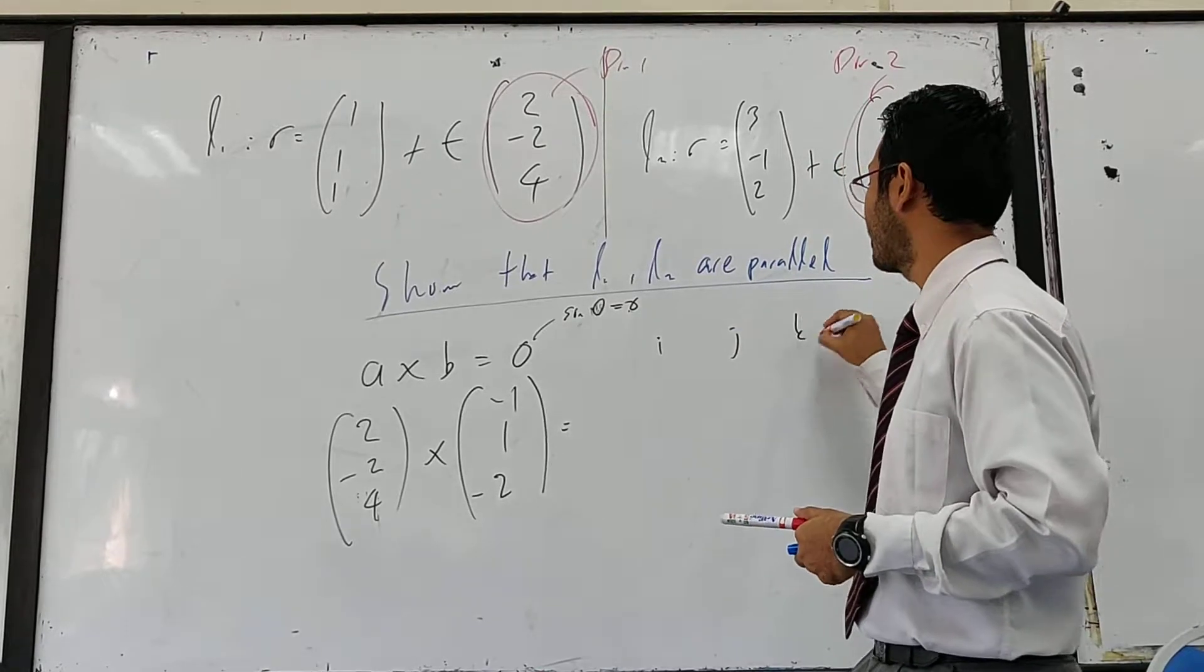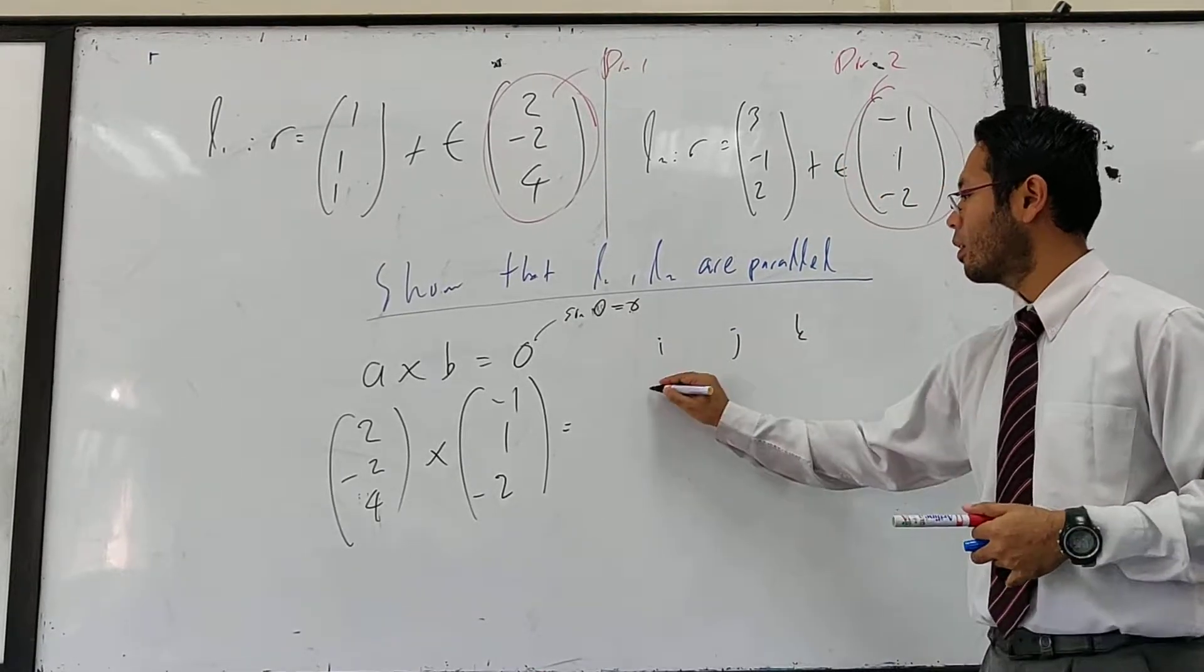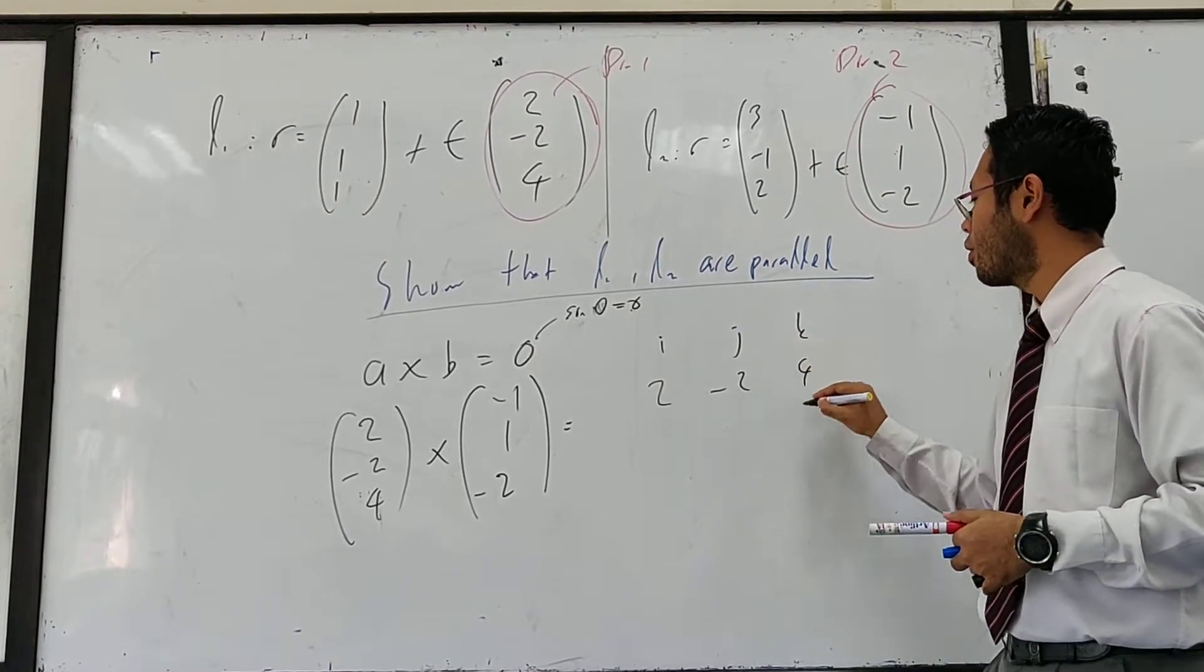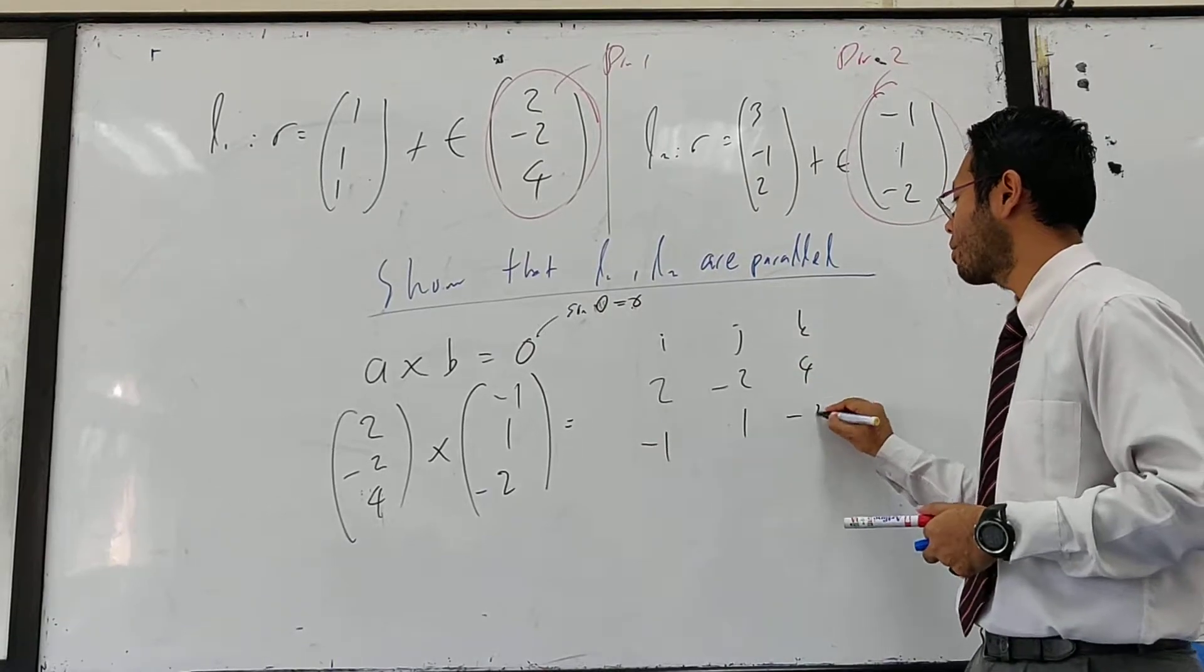So I, J, K, two, negative two, four, negative one, one, negative two.